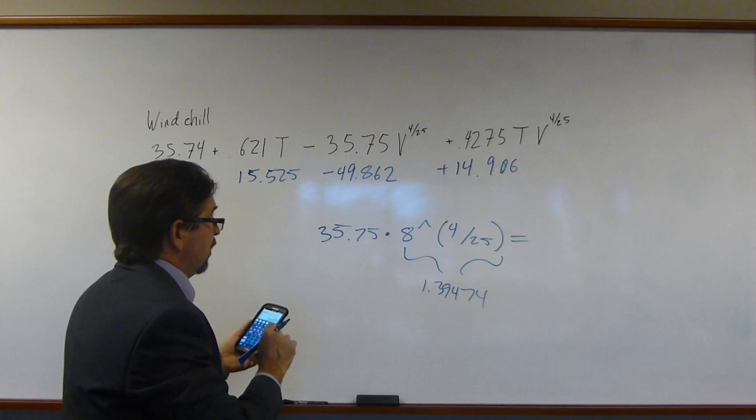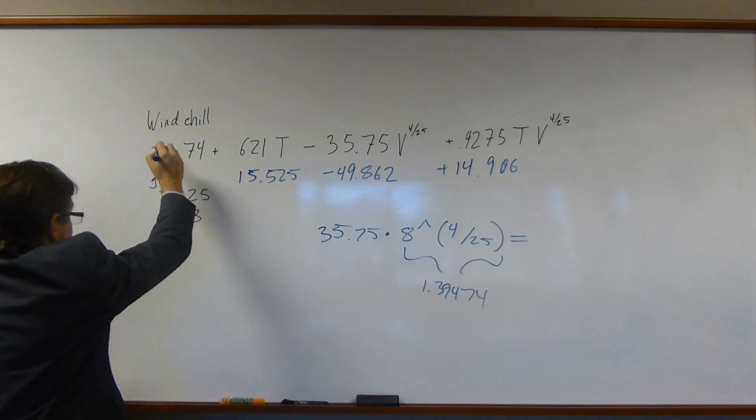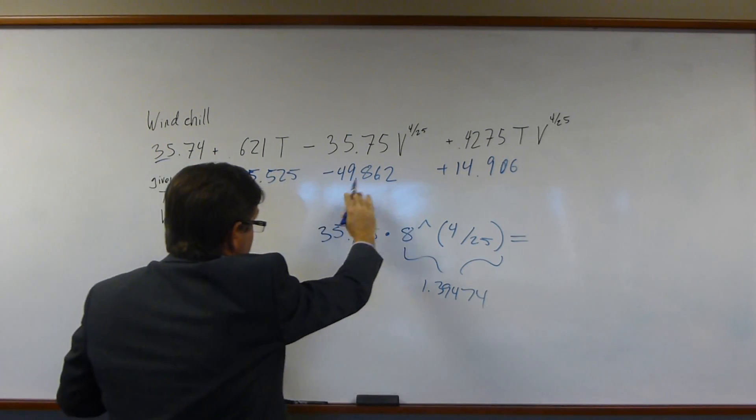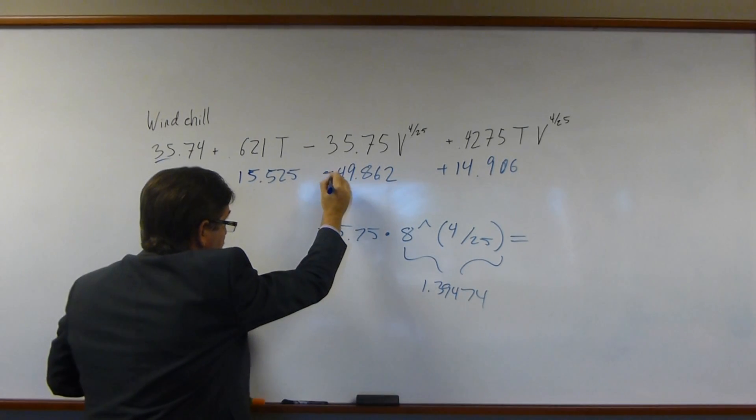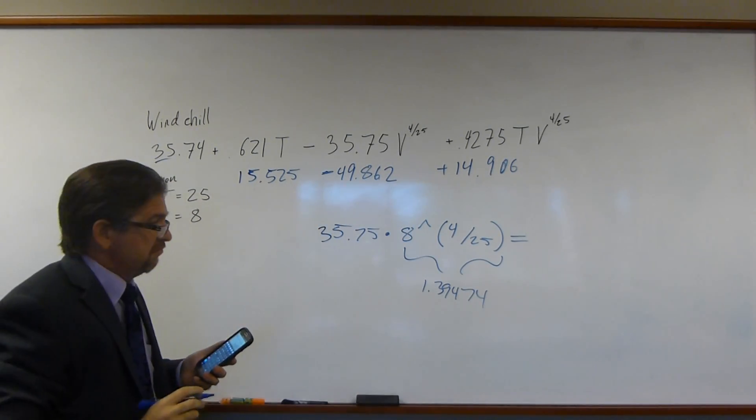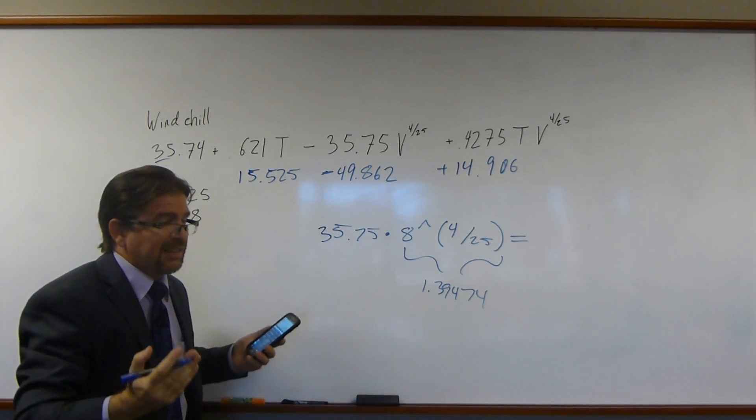So, I'm going to add up this number, this number, this number, and this number. Keep in mind, this one's negative. So, you just add them up at this point. And that's how you solve the problem.